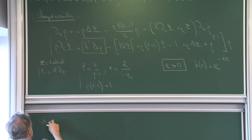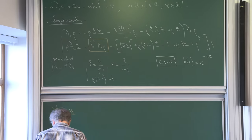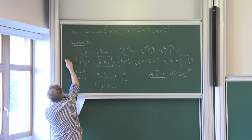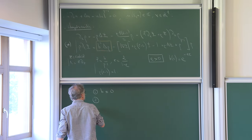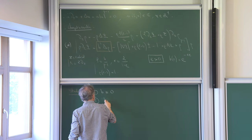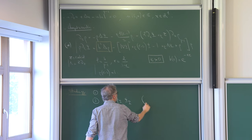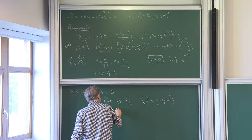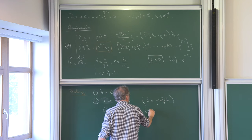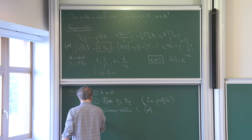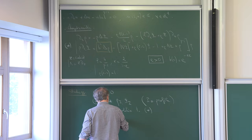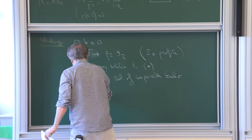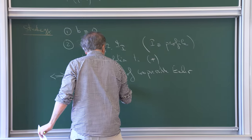Let me tell you what we're going to do today. We're going to run the following program. First, do b equals 0. I'll call my equation star. Second, find what I call rho_p, psi_p — a stationary solution to star. This is what we started the other day, and it is equivalent to having a self-similar solution of compressible Euler with blow-up speed R.